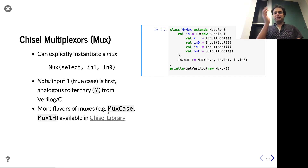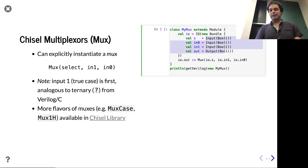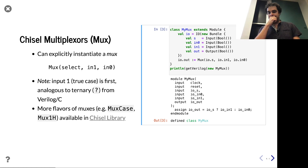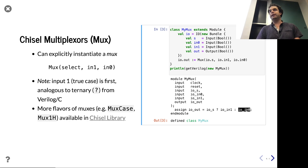Here's our Chisel code: we declare some inputs, have an output, and there's our mux. If we want to see the result, we can see it in Verilog — they chose to use the ternary operator, so you can see very similar syntax: select signal, question mark, true case, false case. And this is just one mux.